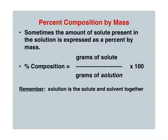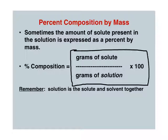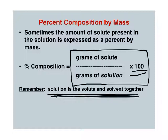Okay, the first one we're going to talk about is percent composition by mass. This is a review from chapter 7. Here, you need to write this down. It's grams of solute over grams of solution times 100, because it's a percentage. Now, here's the key: the solution is the solute and solvent together.